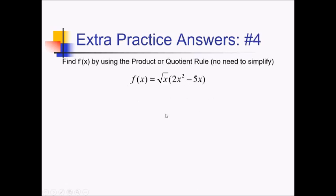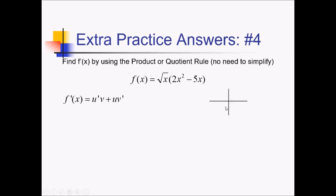For this problem, they want us to find f prime specifically using the product or quotient rule. This is one you could definitely simplify and use the power rule on, but they want you to practice the technique of these different rules. So let's go ahead and use it. This is a product, so let me write out the product rule: u prime v plus u v prime. Not necessary to write it out, but it's nice to know where things are going to go.